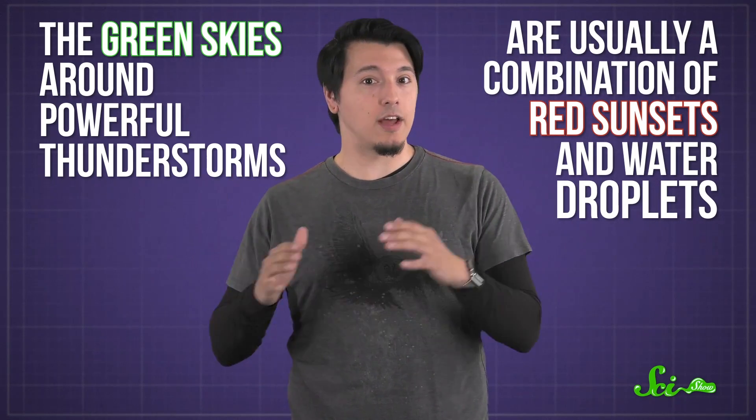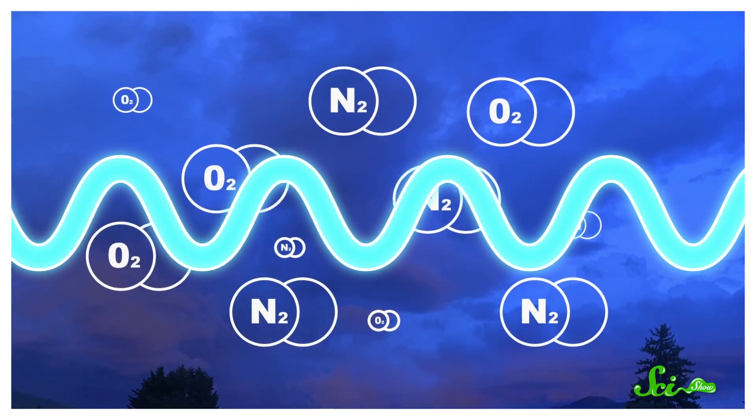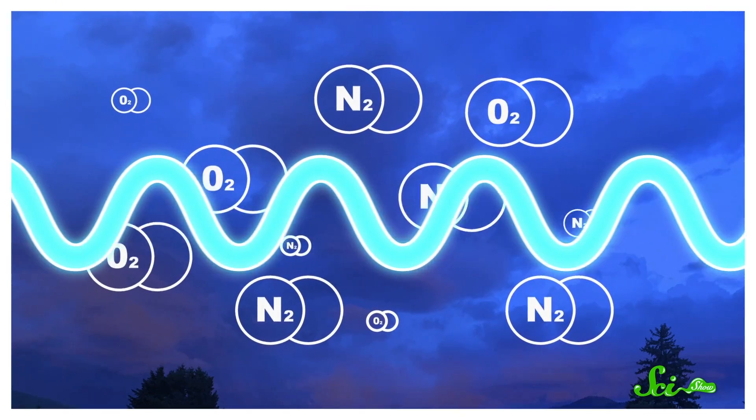As far as most scientists can tell, the green skies around powerful thunderstorms are usually a combination of red sunsets and water droplets. Daytime skies are blue because bluer, shorter-wavelength visible light tends to bounce off air molecules better than redder, longer-wavelength light. So the blue light gets bounced all over the sky and looks like it's coming from everywhere.